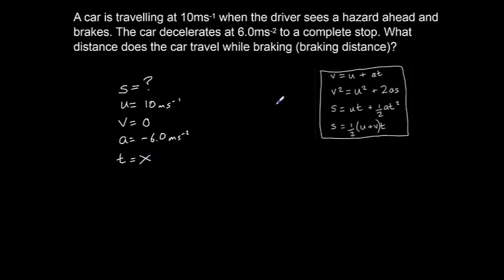So once again, we look at our equations of motion. We're looking for an equation that does not have T in it. So that rules out the first equation. The second equation could work. The third equation has T, so that's no good. And so does the fourth equation. So we're going to be using V squared equals U squared plus 2AS. Let's write that out. V squared equals U squared plus 2AS.